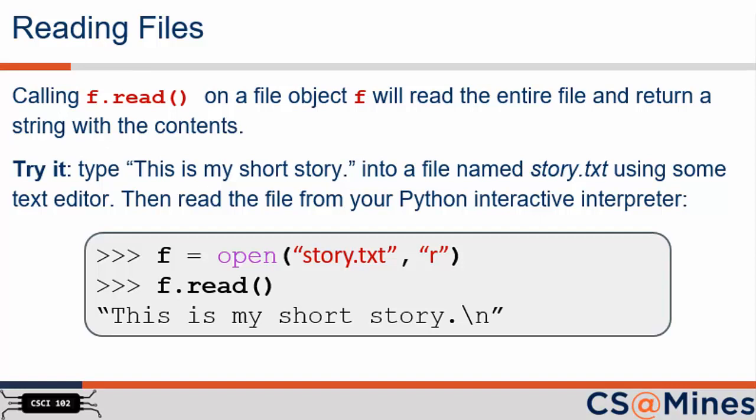Once we have opened a file for reading, the next question is, how do we read the lines of text inside the file? Not surprisingly, Python has a read function available. And we call this read function using the dot operator on our file object, which we have named f in our open file command. In this example, the read function will return all the text that exists in the file as a string. We encourage you to try it.